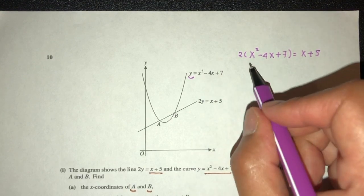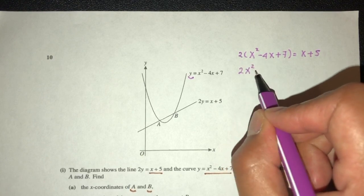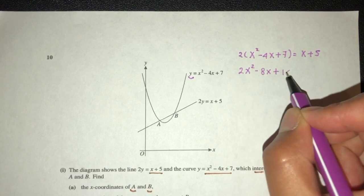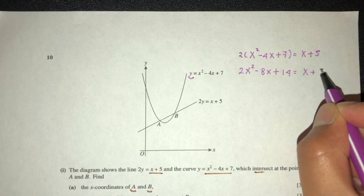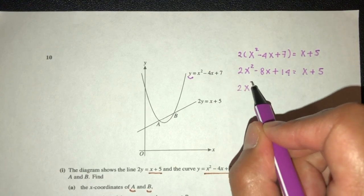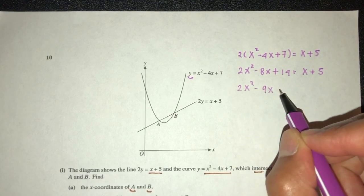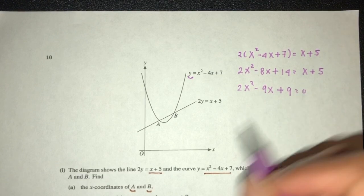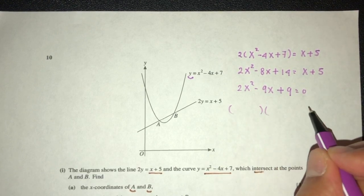2y, this, expands, you will have 2x squared minus 8x plus 14 have to be x plus 5. 2x squared minus 9x plus 9 have to be 0. Now, we can factorize and see what happens.